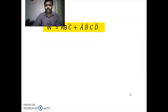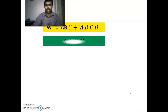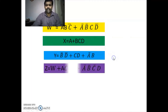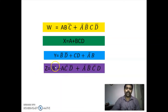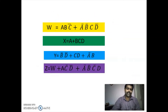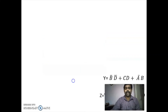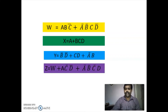The expression for W, X, Y, and Z are compared. The first two terms of Z are similar to W. So we rewrite the expression for Z as W plus AC-bar D-bar plus A-bar B-bar C-bar D. This reduces the number of product terms to three.